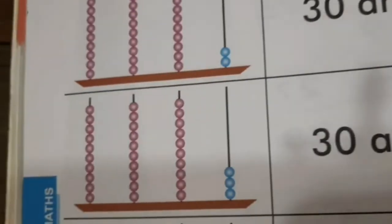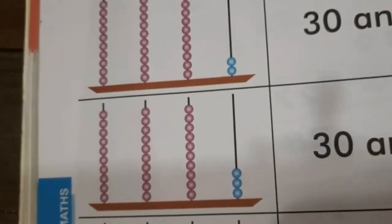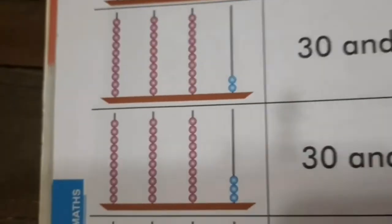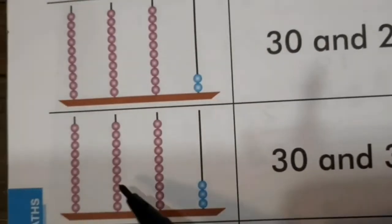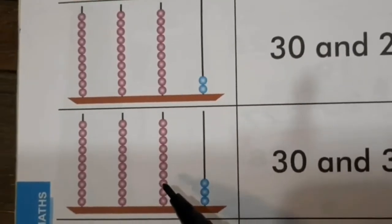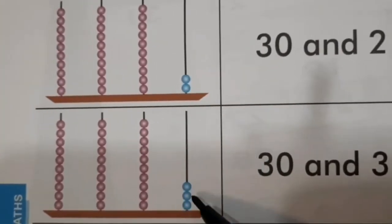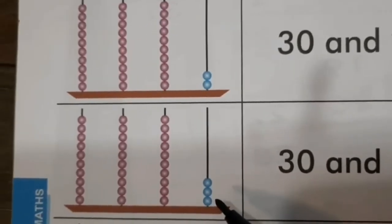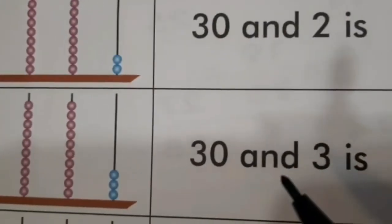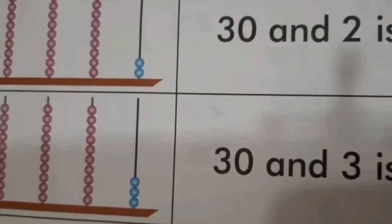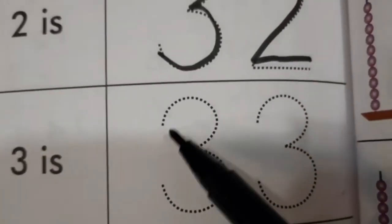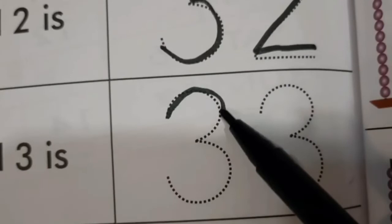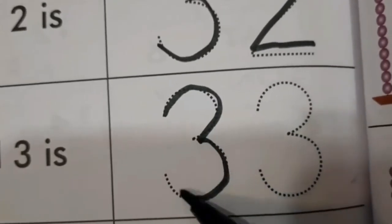Okay, children. Now, we move on to the next one. Again, we have 10, 20, 30 and 1, 2, 3. So, we have 30 and 3, which is 3, 3 — 33. So, aap sab log 33 number trace karyo.